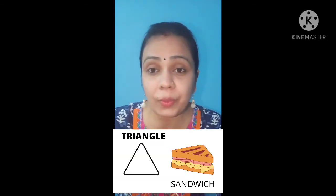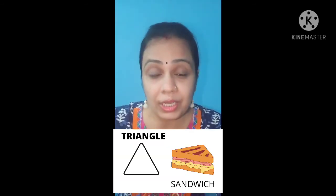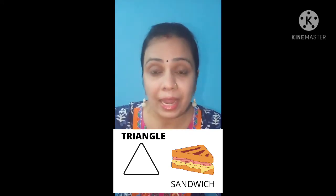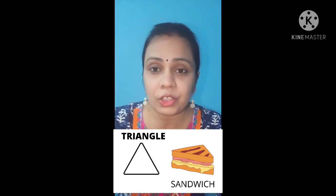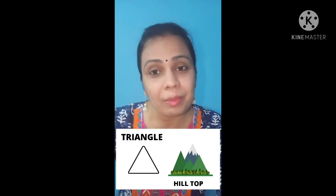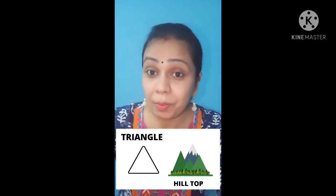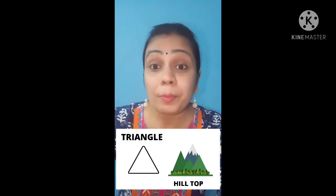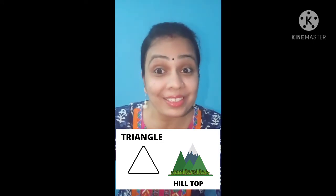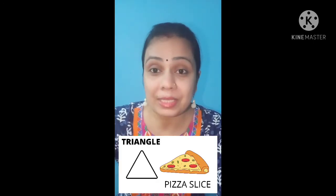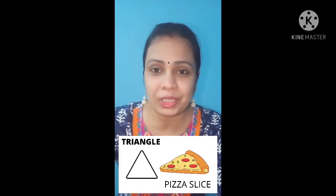Next, children, this is triangle. Which shape is this, children? This is triangle. Sandwich is triangle in shape. Hilltop is triangle in shape. Pizza slice is triangle in shape.